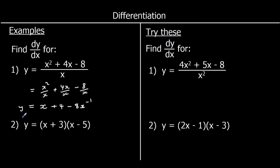Now we can differentiate and say dy/dx. x differentiates to just 1, since it's the same as 1·x to the power of 1 — times by the power gives 1, take one off the power gives x to the power of zero, which is 1. The 4 is a horizontal line — it has no gradient. Finally, negative 8x to the power of negative one: times by the power — negative 8 times negative one is positive 8 — and take one off the power, negative one take away one is negative two.